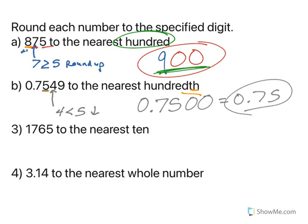1,765 to the nearest 10. 6 is in the 10 place. I look at 5. 5 tells me to round up, so we're going to add 1 to the 6. Anything in front of that stays. So the 17 stays. 6 goes to 7, and I end with a 0.